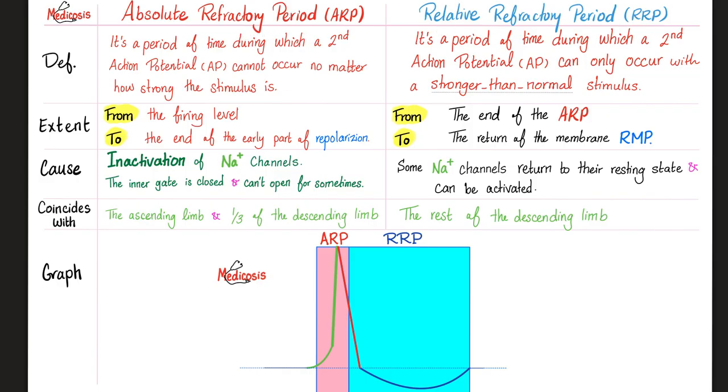How about relative refractory period? Well, I'm still refractory period. So I have a period of time during which a second action potential is hard, unless you give me something super, something supranormal, something suprastimulus, something stronger than usual, only then I will start listening to you. And this starts from the end of the absolute refractory period to the end of the hyperpolarization before you reach the resting membrane. Why does this happen? Because some sodium channels have returned to their resting state. Oh, I'm ready to be opened again.